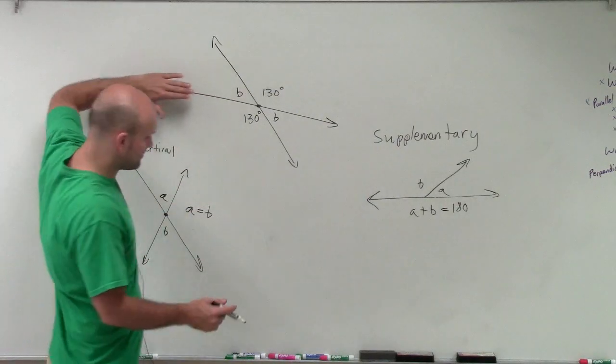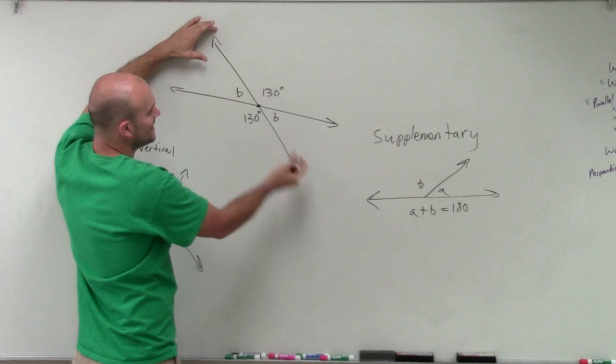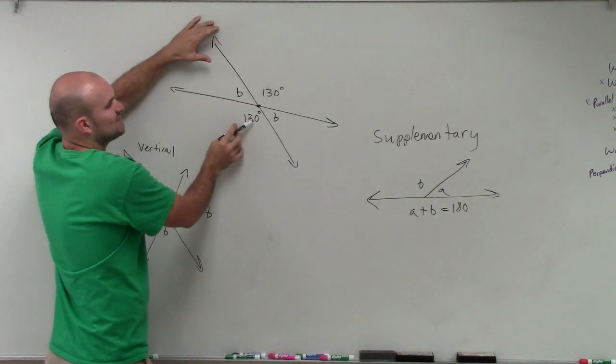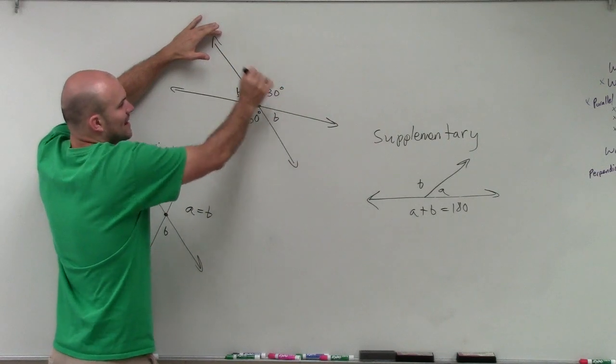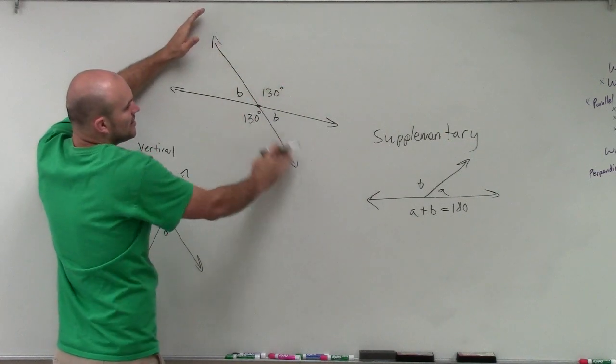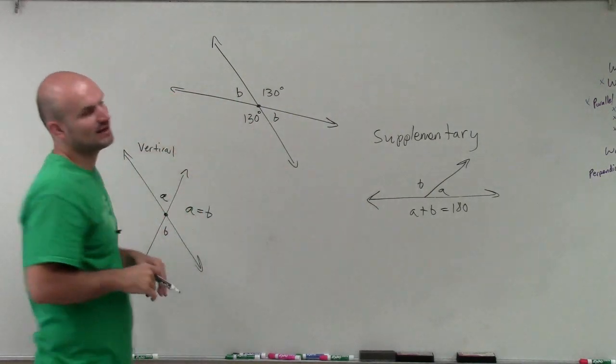So when you look at this problem, if I was again, kind of forgetting about one of these lines, and I just focus on this line, I see that I have two angles that add up to 180. And I showed you the vertical angle, because you can see it on the other side. These two angles add up to 180. If you forget about this length, you can see on this line, these two angles add up to 180, and these two add up to 180.